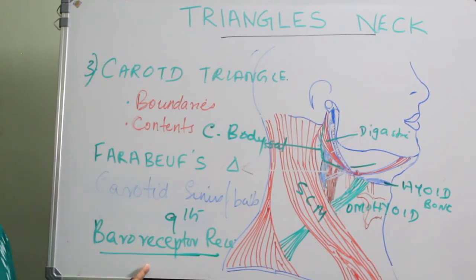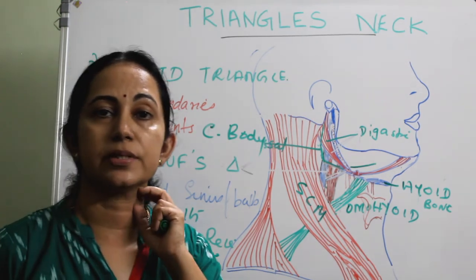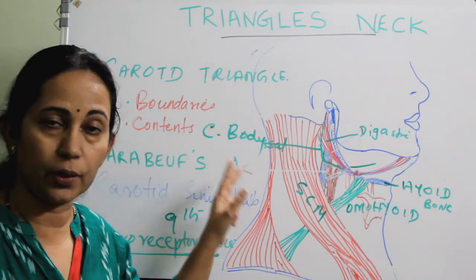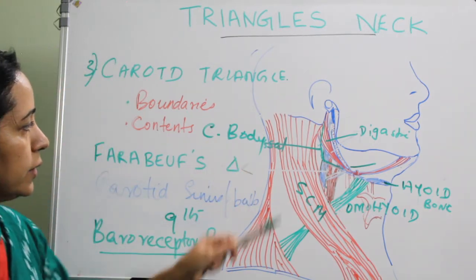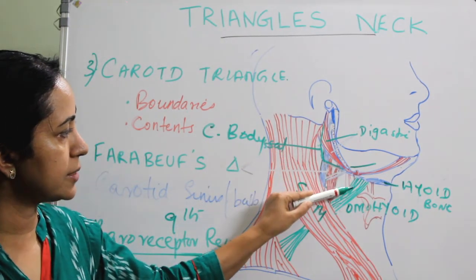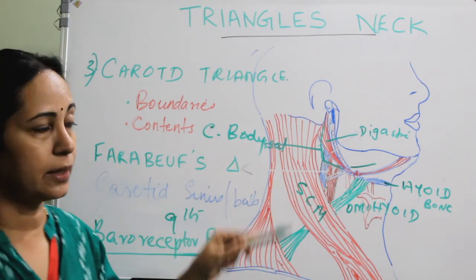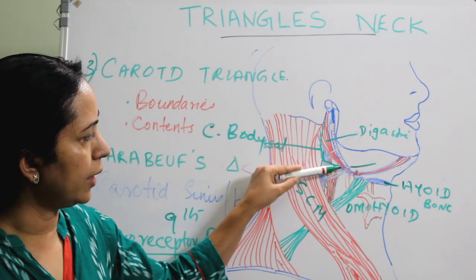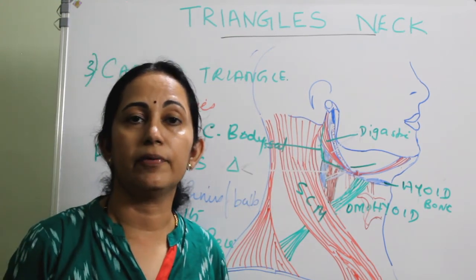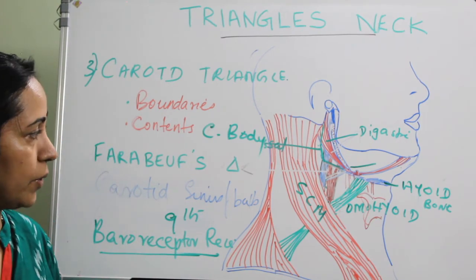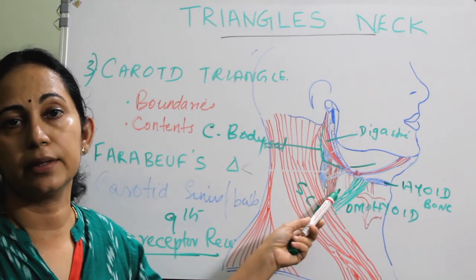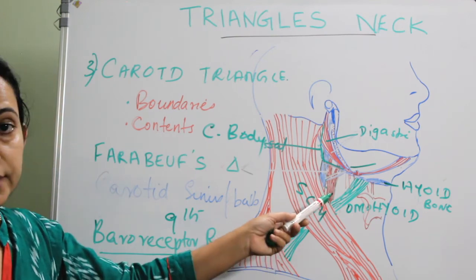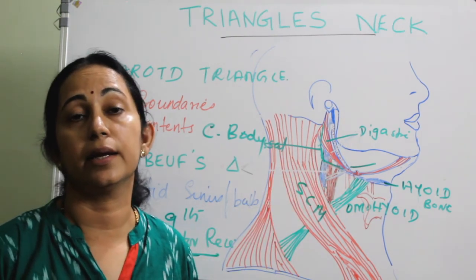You should know the baroreceptor reflex, which regulates blood pressure on stretching the carotid artery. These are the contents of the carotid triangle. The boundary is formed by the posterior belly of digastric, superior belly of omohyoid, and the sternocleidomastoid. The floor is formed by the thyrohyoid, hyoglossus, and the inferior and middle pharyngeal constrictors. Contents are the internal jugular vein, common carotid artery dividing into internal and external carotid with five branches, hypoglossal nerve, and vagus nerve.